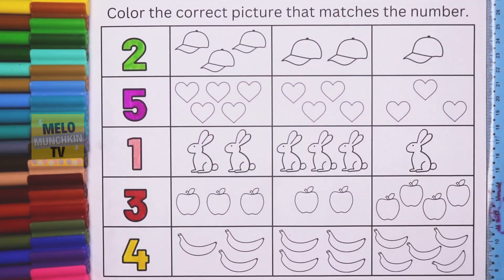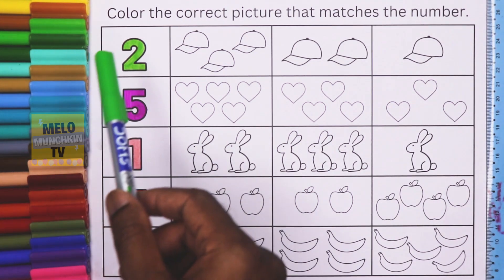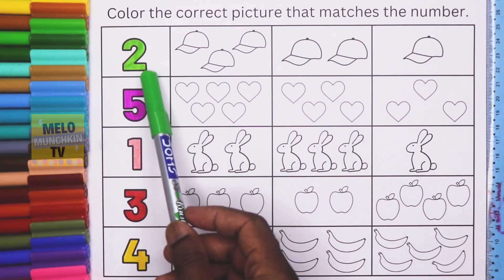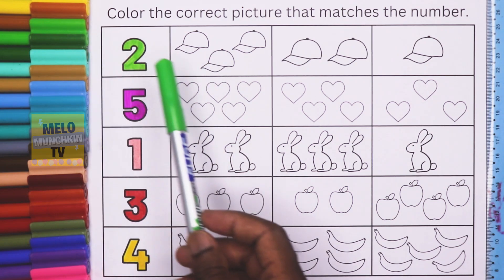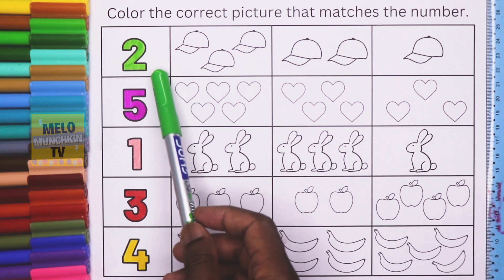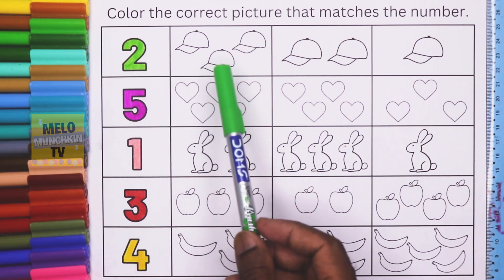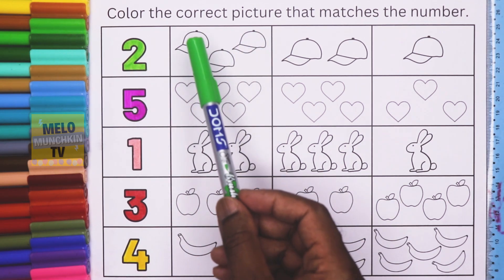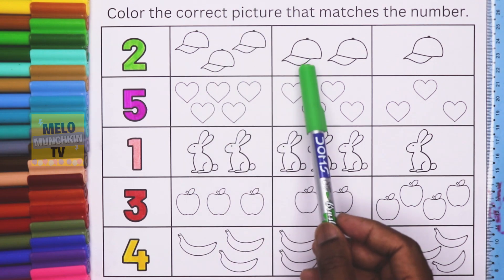Hello kids! Today in this video we will color the correct picture that matches the number. Numbers are given with different colors — we will first see the number and choose the box where this number is. For example, in the first box there are three caps: 1, 2, and 3.